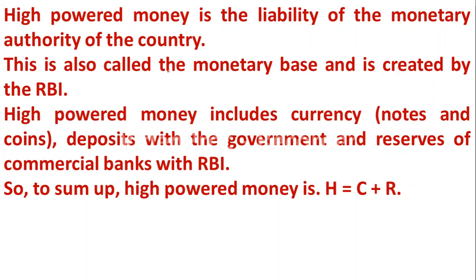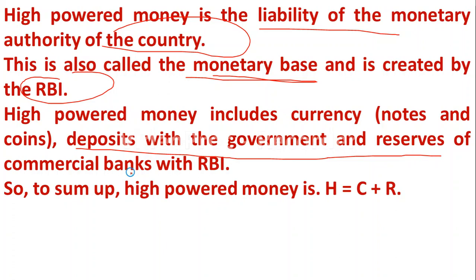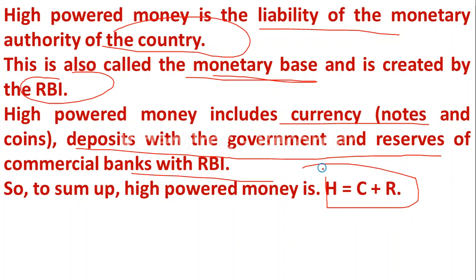High powered money includes deposits with the government and reserves of commercial banks with the RBI, as well as currency and notes held by the people. The formula is: H = C + R, where H is high powered money, C is currency held with the public, and R is reserves of commercial banks with the RBI. Please remember this formula.